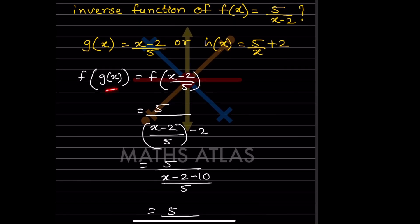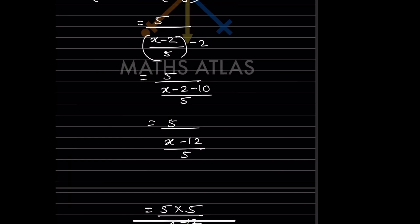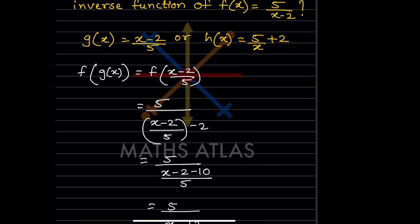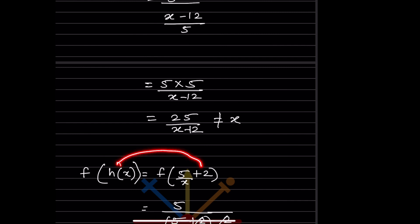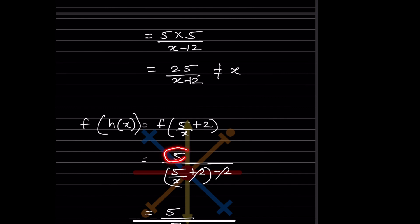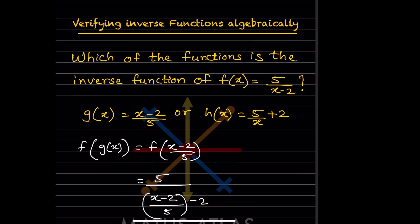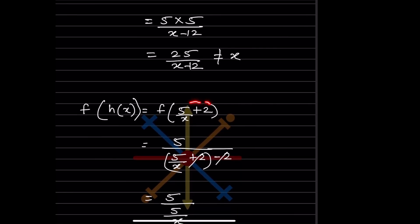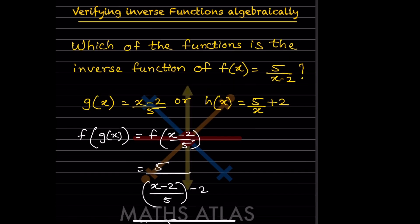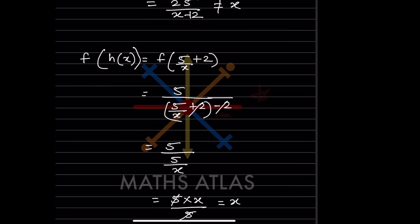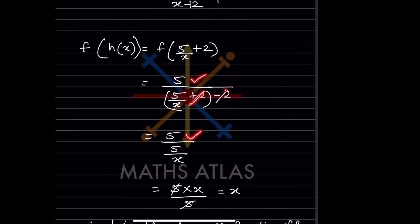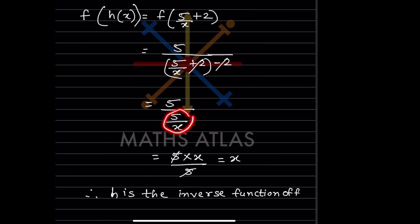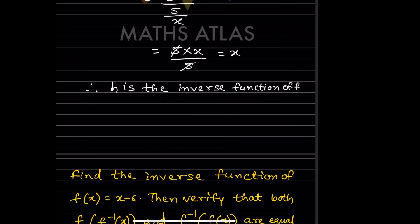Now let's check f(h(x)). The value of h(x) is 5/(x+2). In place of x in f(x), we write 5/(x+2). So we have 5 divided by [5/(x+2) minus 2]. The +2 and -2 cancel, leaving 5 divided by 5/x. Flipping over, x goes to the numerator and 5 to the denominator, and the 5s cancel — giving us x. Therefore, h is the inverse function of f.